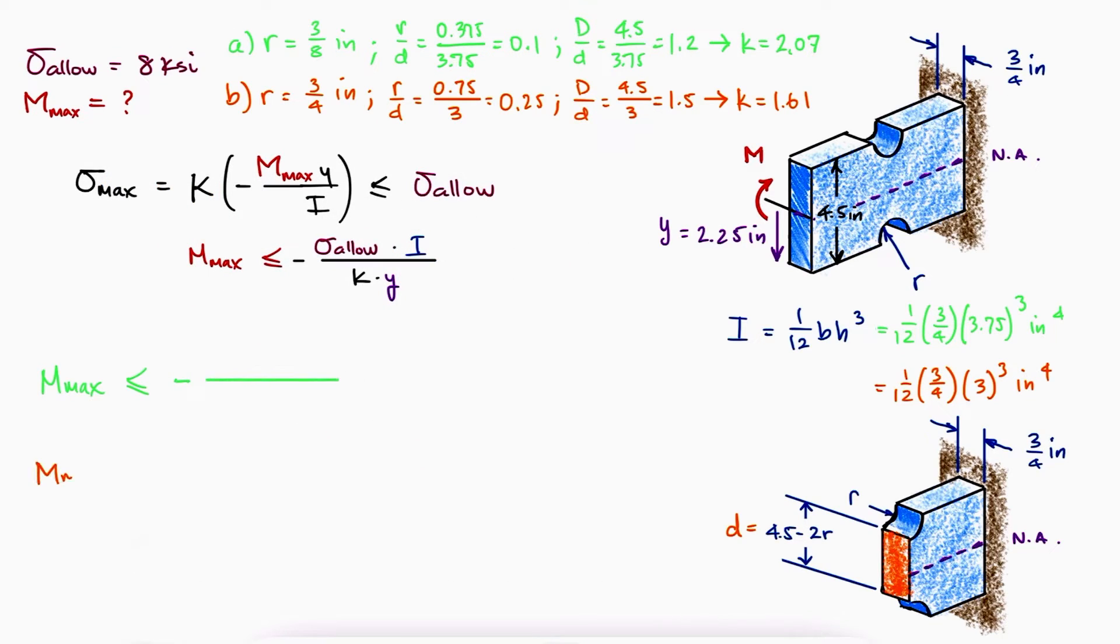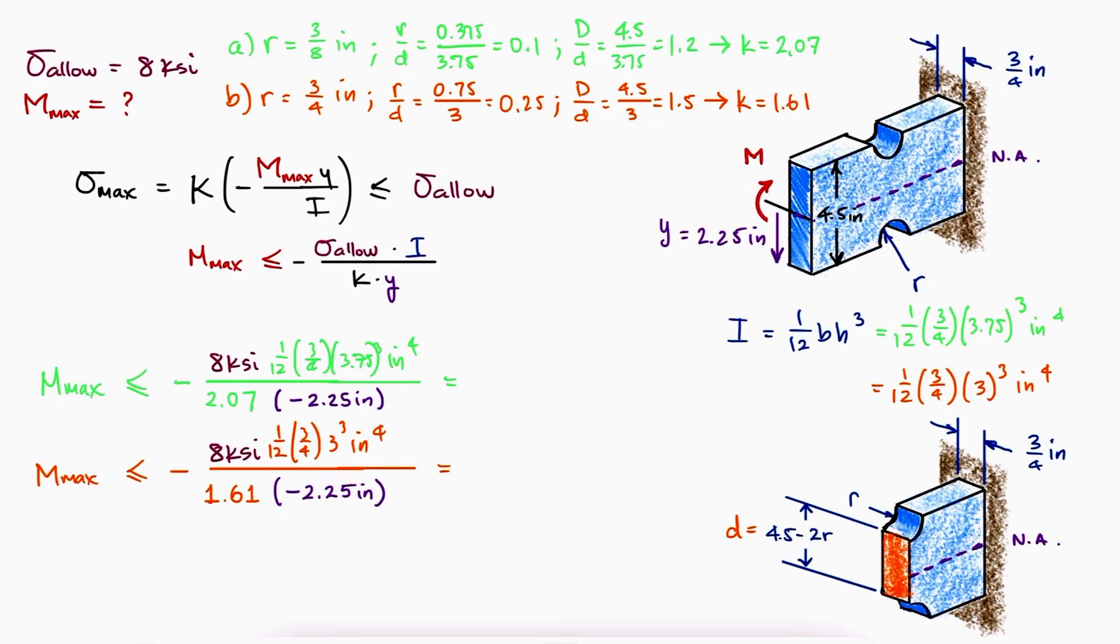Substituting the values for the allowable stress, the second moment of area, the stress concentration factor K, and that negative distance from the neutral axis to the location of the maximum tensile stress, we find the maximum value that the moment can take for a 3 eighths of an inch radius groove and for a 3 quarters of an inch radius groove.